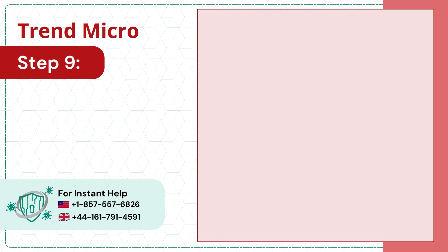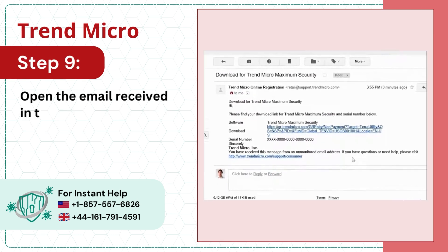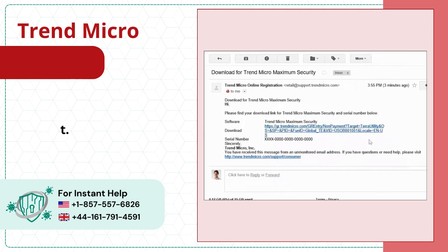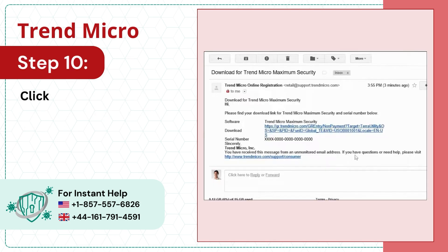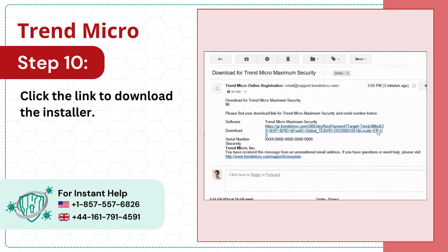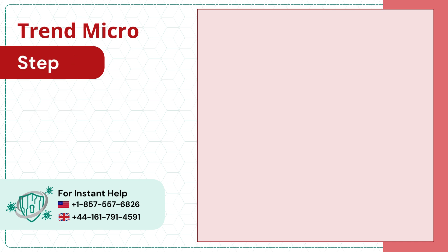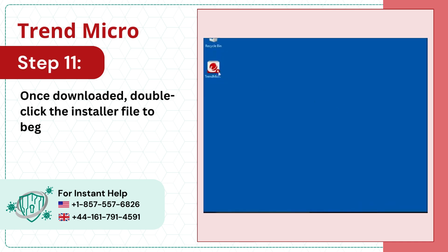Step 9: Open the email received on the device you wish to protect. Step 10: Click the link to download the installer. Step 11: Once downloaded, double-click the installer file to begin the installation.